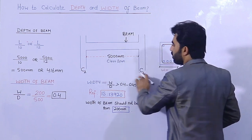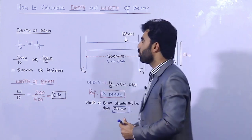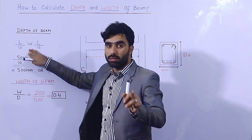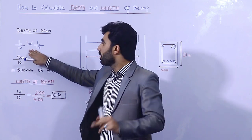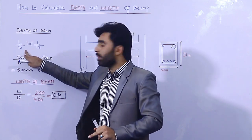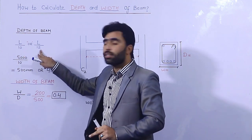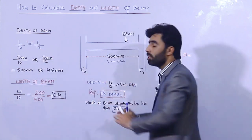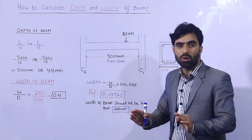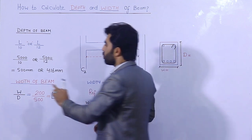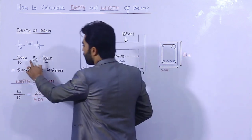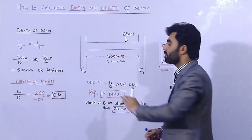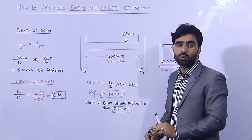As you can see, this is the beam between column 1 and column 2. We have the formula: by thumb rule, the depth of the beam equals L divided by 10, or L divided by 12, where L is the clear span between the two columns.